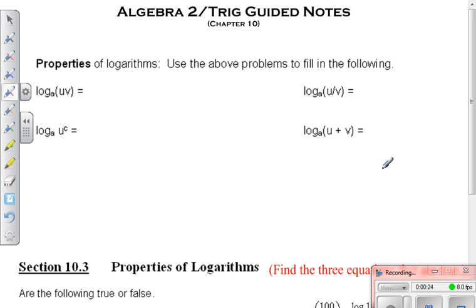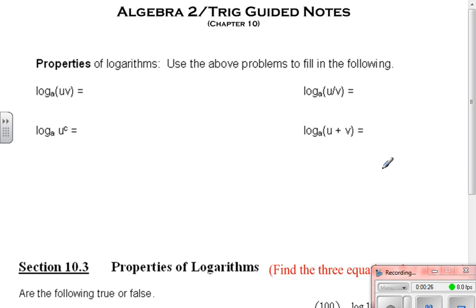These are things you should obviously put in your cheat sheet. If you have a log, and inside the log is a product, things being multiplied, you can simplify that by taking the log of each part and adding them.